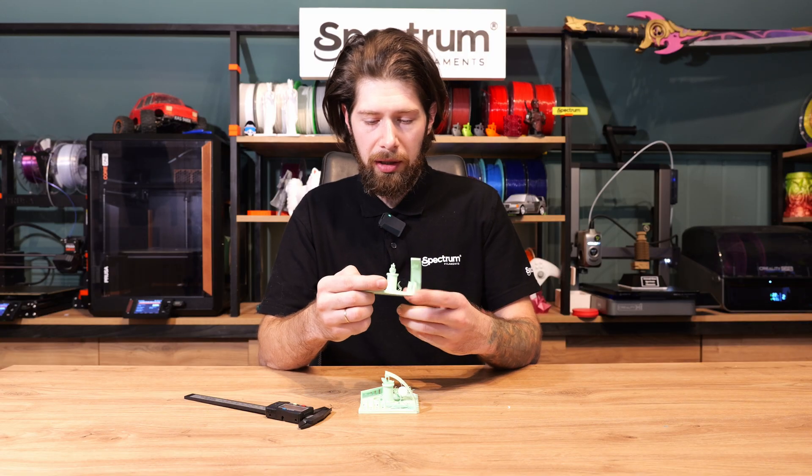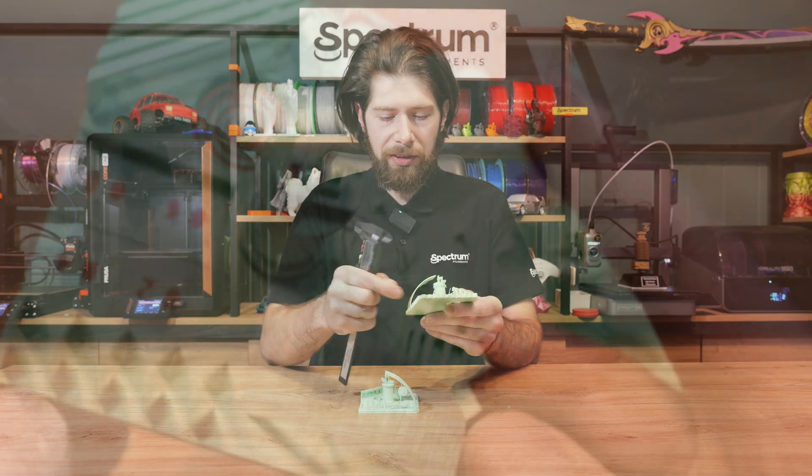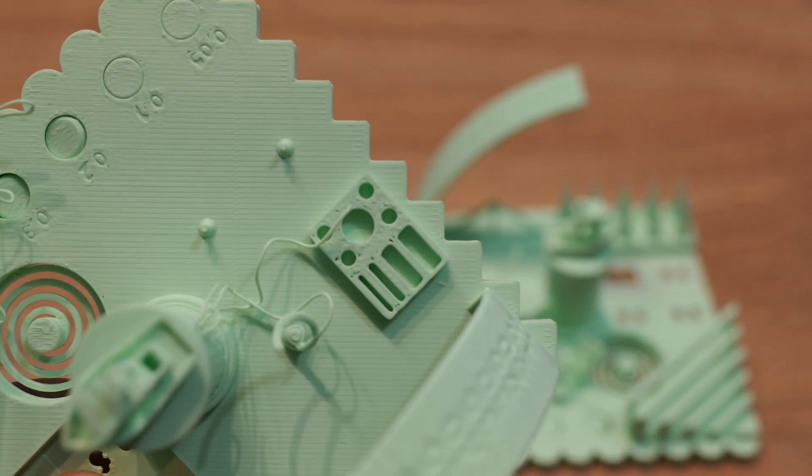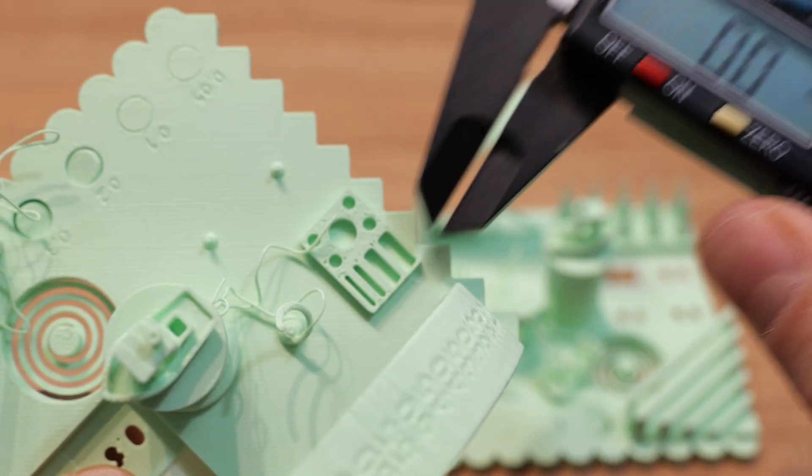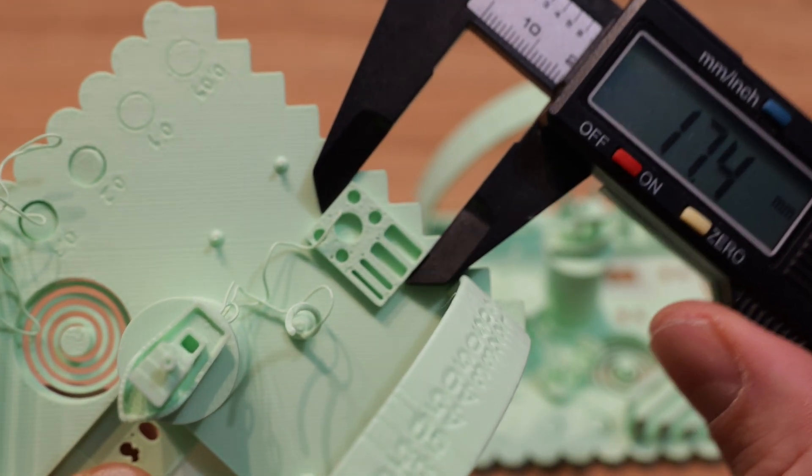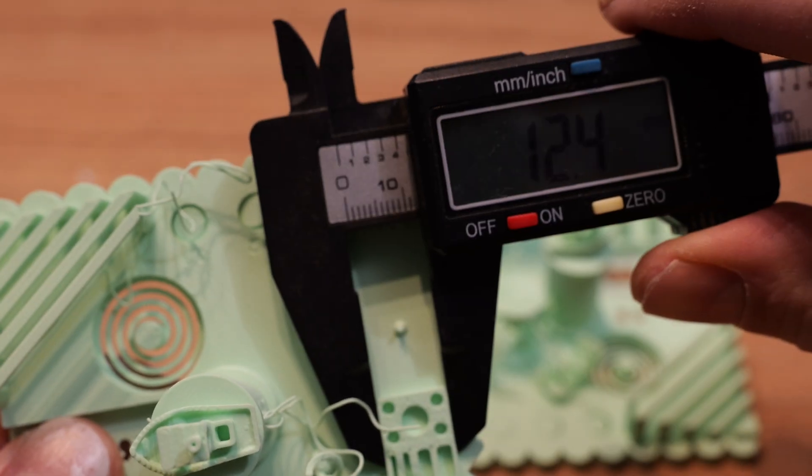Then we have this small segment here that's a size test and by checking it with the caliper we can see that it's mostly in the size but the hole is four millimeters instead of five. So this is not good.